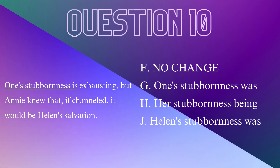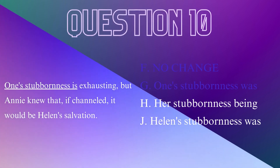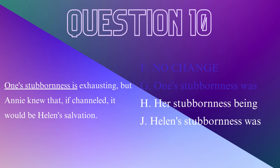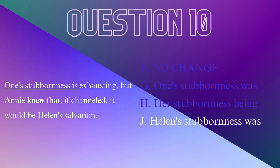Question 10. 'One's stubbornness is exhausting, but Annie knew that, if channeled, it would be Helen's salvation.' Should we say 'once,' 'her,' or 'Helen's'? If talking about people in general we would use 'one's,' but we are specifically talking about Helen's stubbornness, so rule out F and G. The passage as a whole is in the past tense, making the correct answer J — 'Helen's stubbornness was.'